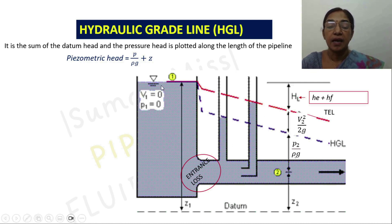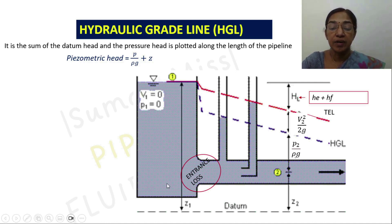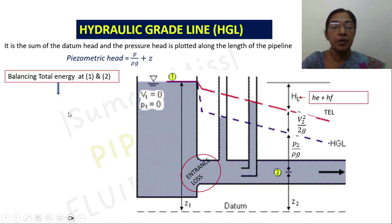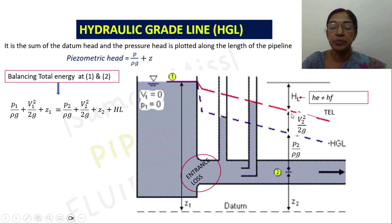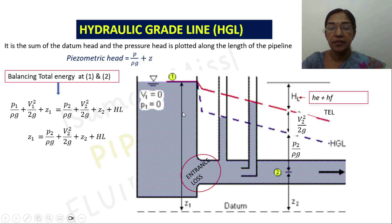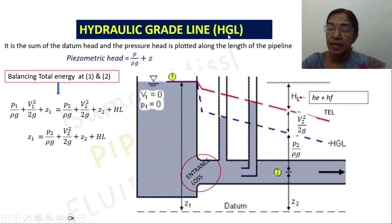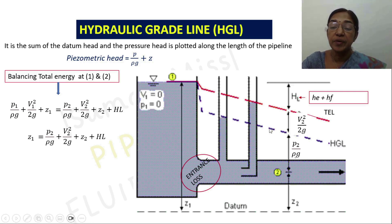This can be explained by applying Bernoulli's equation at section 1 and section 2. At the free surface, the pressure is atmospheric and velocity equals zero. Point 1 is located at a distance z1 from the datum. Bernoulli's equation at section 1: P1/ρg + v1²/2g + z1 = P2/ρg + v2²/2g + z2 + hf. The total energy at section 1 (z1) equals total energy at section 2 plus head loss. Head loss includes hc plus hf. To draw the hydraulic gradient line, first draw the total energy line, then drop a vertical distance equal to the velocity head — that gives the hydraulic gradient line.